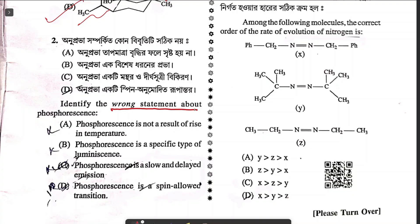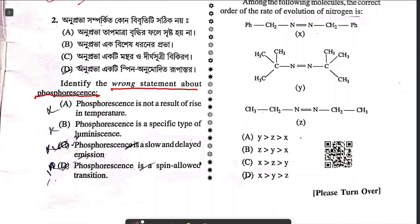Question two says identify the wrong statement about phosphorescence. Phosphorescence and fluorescence are two types of photoluminescence. Phosphorescence is a spin-forbidden transition — it is a relatively slower, delayed process. Phosphorescence does not depend upon temperature. The only false option is D: 'phosphorescence is a spin-allowed transition' — it is actually a spin-forbidden transition.